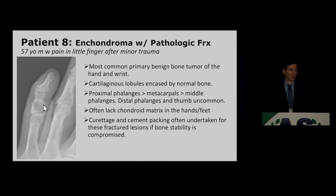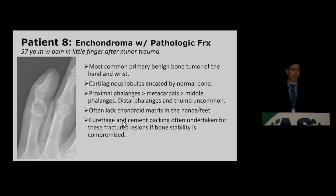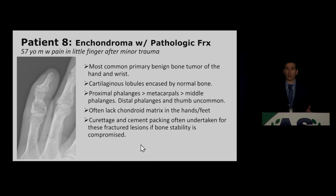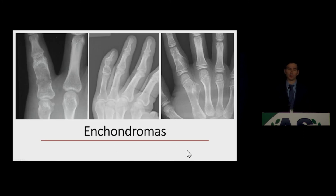Patient 8 has a lytic lesion with no appreciable internal matrix — an enchondroma with a pathologic fracture. In the hands and feet, enchondromas often lack cartilaginous matrix, can be very expansile, and can thin the cortex. Unlike enchondromas elsewhere in the body, cortical thinning or scalloping in the hands and feet is not an indicator of malignant transformation. Some lesions that repeatedly thin bone and cause pathologic fractures are treated with curettage and cement packing. Very eccentric lesions may be called juxtacortical or subcortical chondromas.